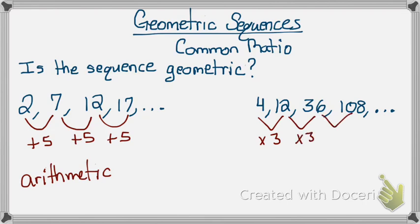And to get from 36 to 108, I'm multiplying times 3. So since I'm multiplying by the same number every time, this is geometric. And of course, 3 is my common ratio.